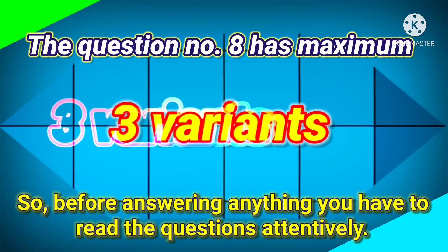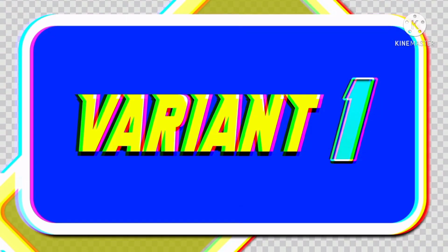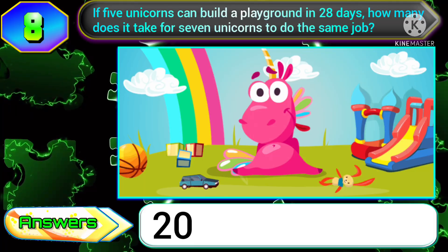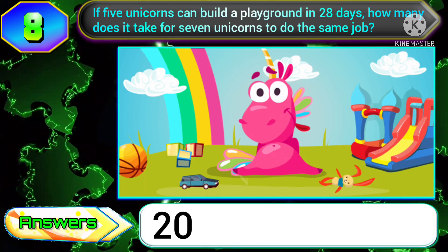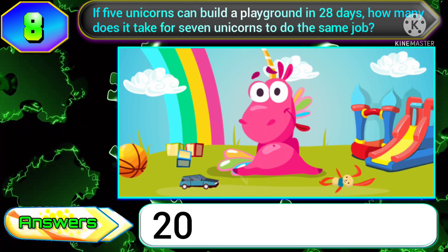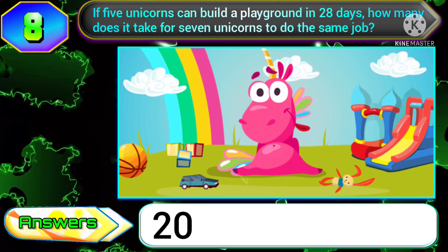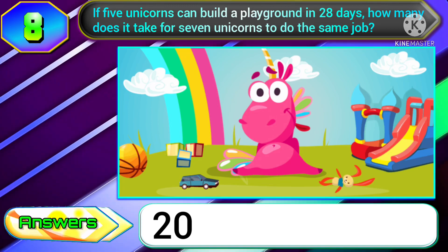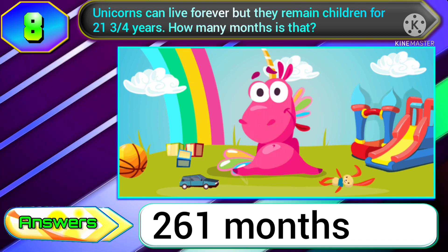Question number eight has maximum three variants, so before answering anything you have to read the questions attentively. In variant one, if the question is: if five unicorns can build a playground in 28 days, how many days does it take for seven unicorns to do the same job — then the answer will be 20.